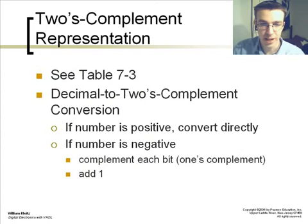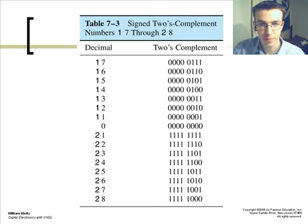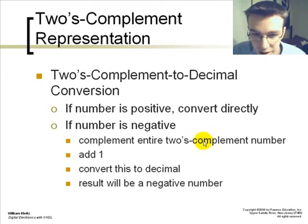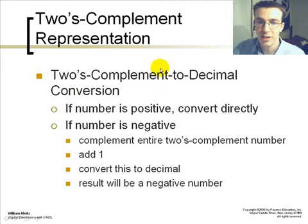We can see this via table 7-3. There's a decimal to two's complement conversion. So you take your 7, which is 0, 1, 1, 1, and your two's complement, which is 1. And you take the same thing with your 2. Your 2 is all 1's, and your 1 is the reverse, which is two's complement to decimal conversion.